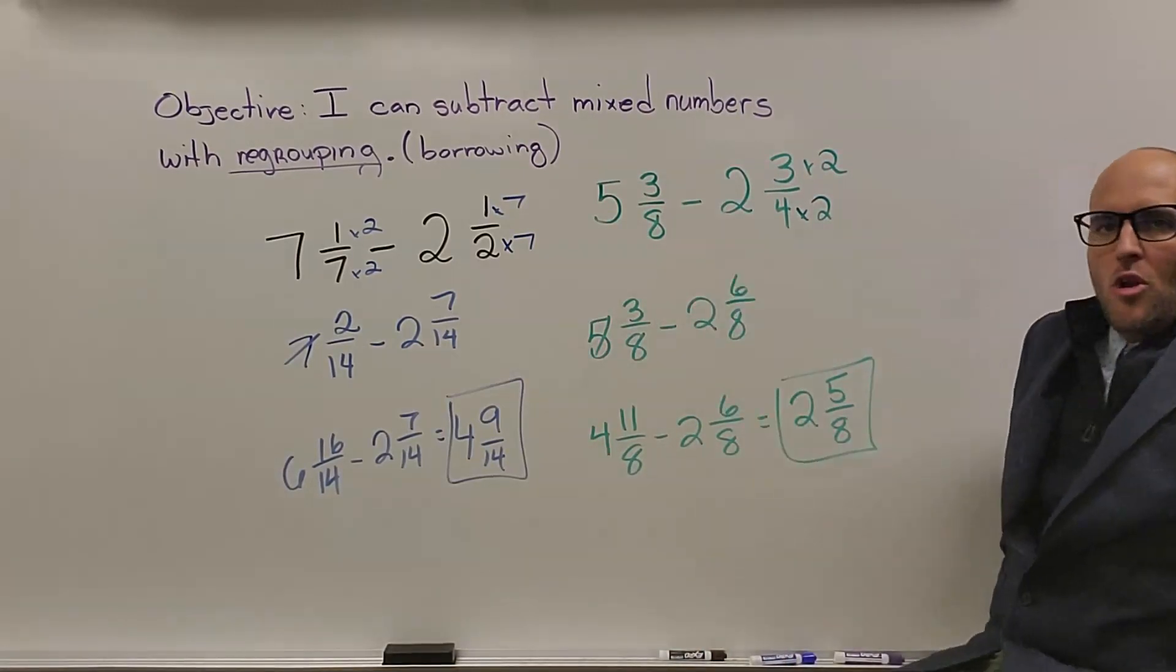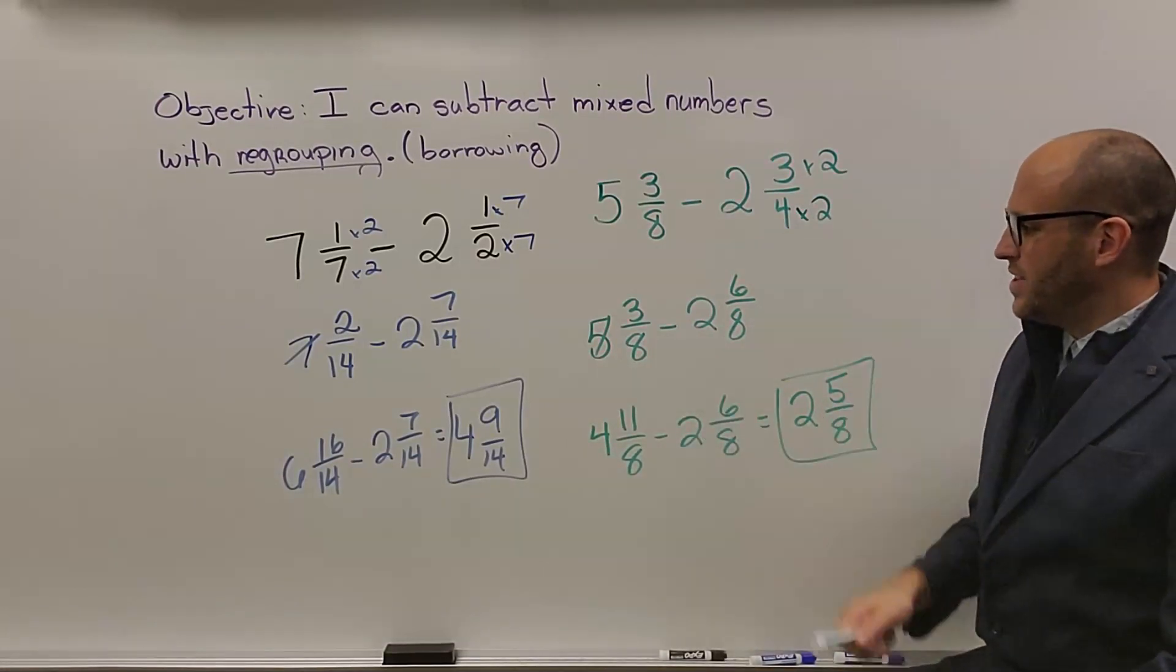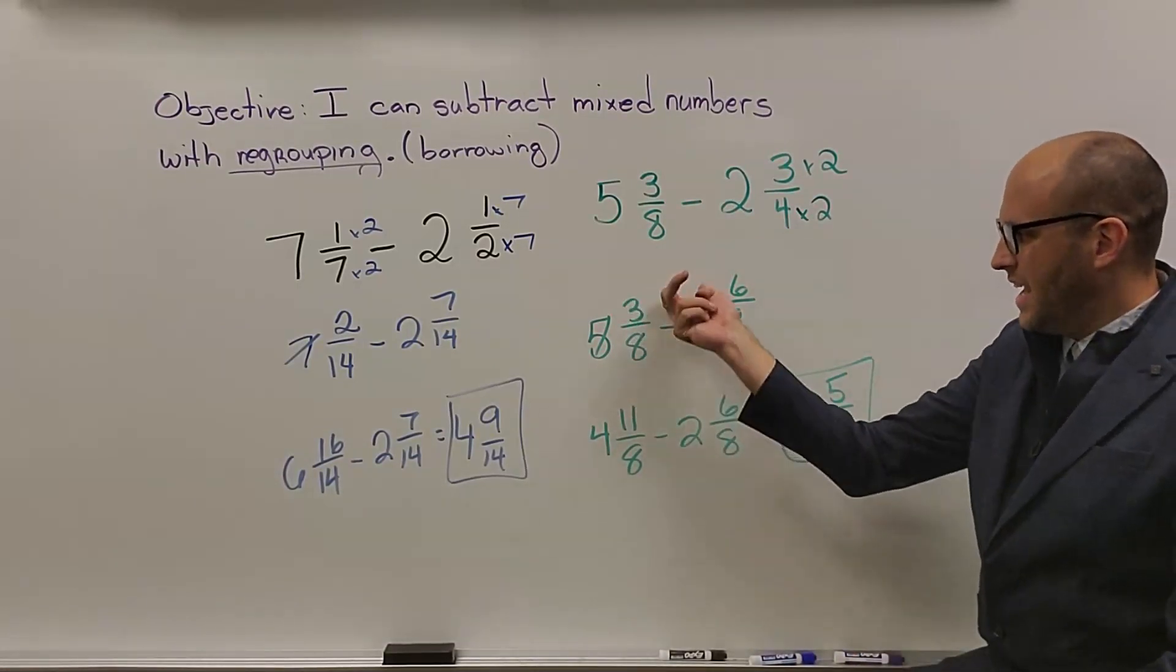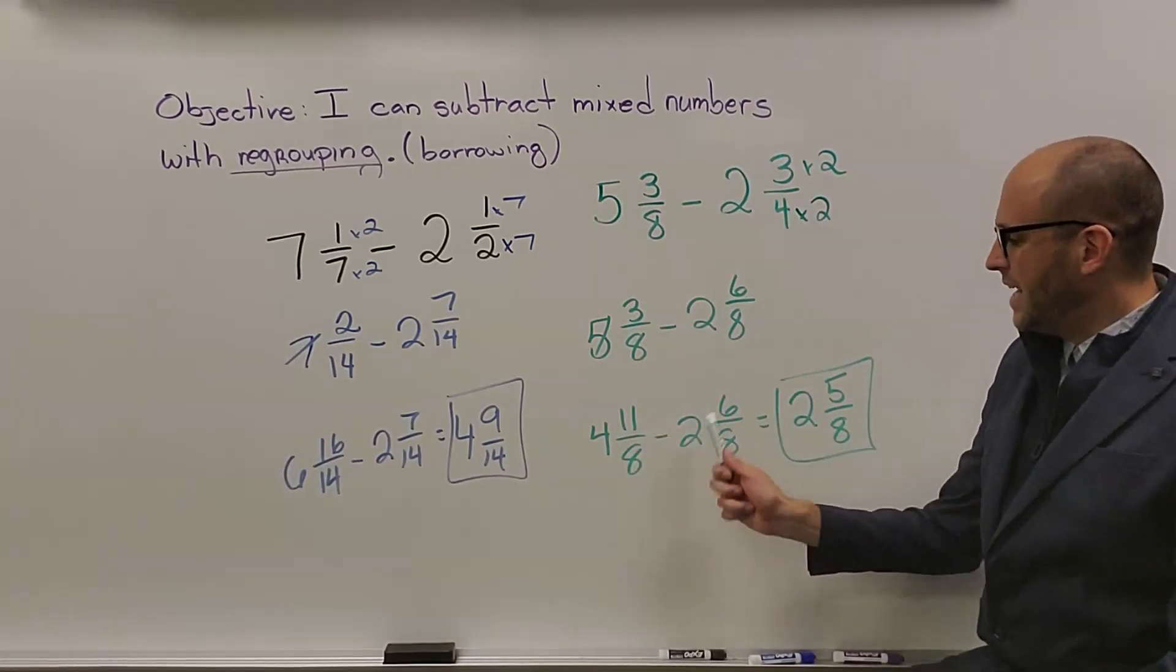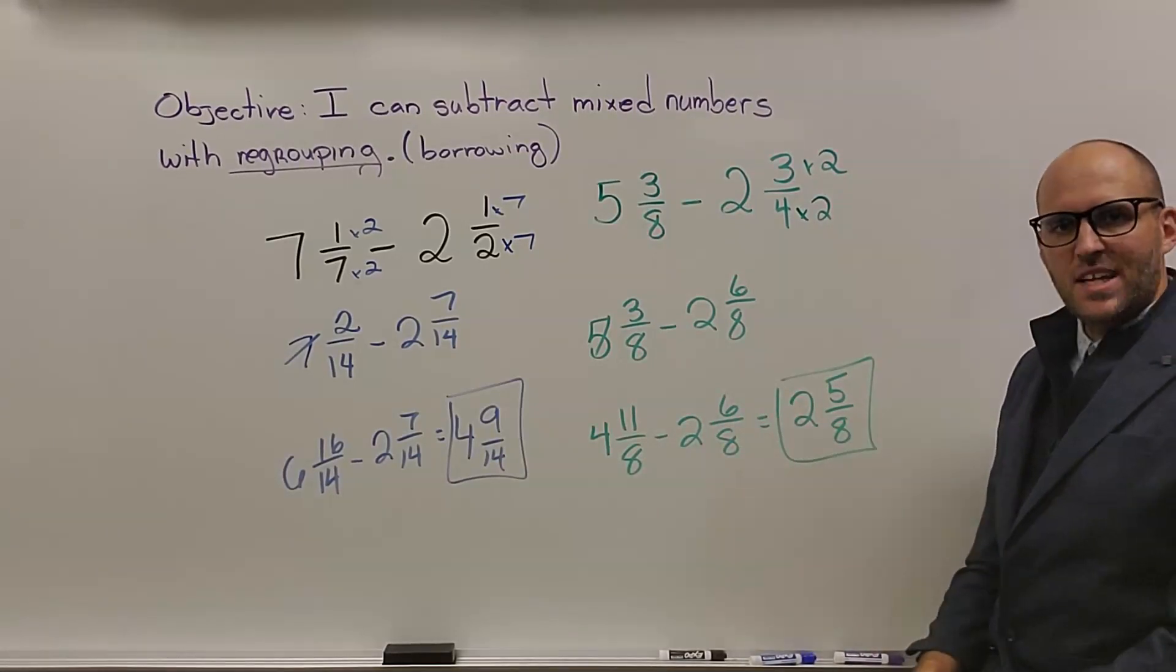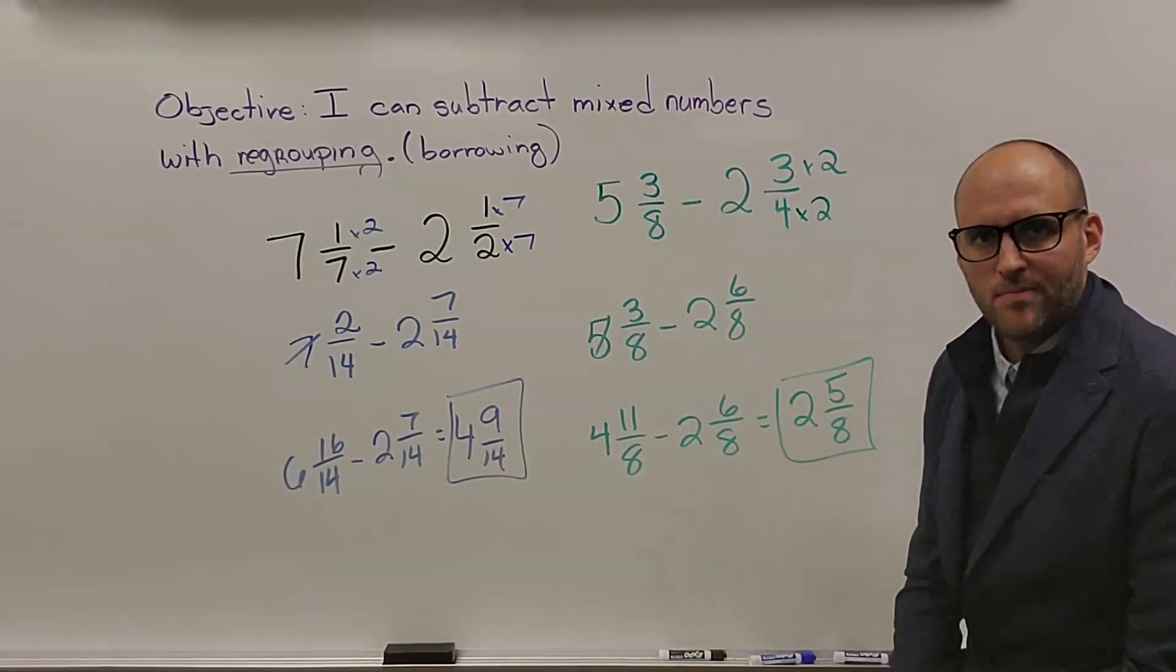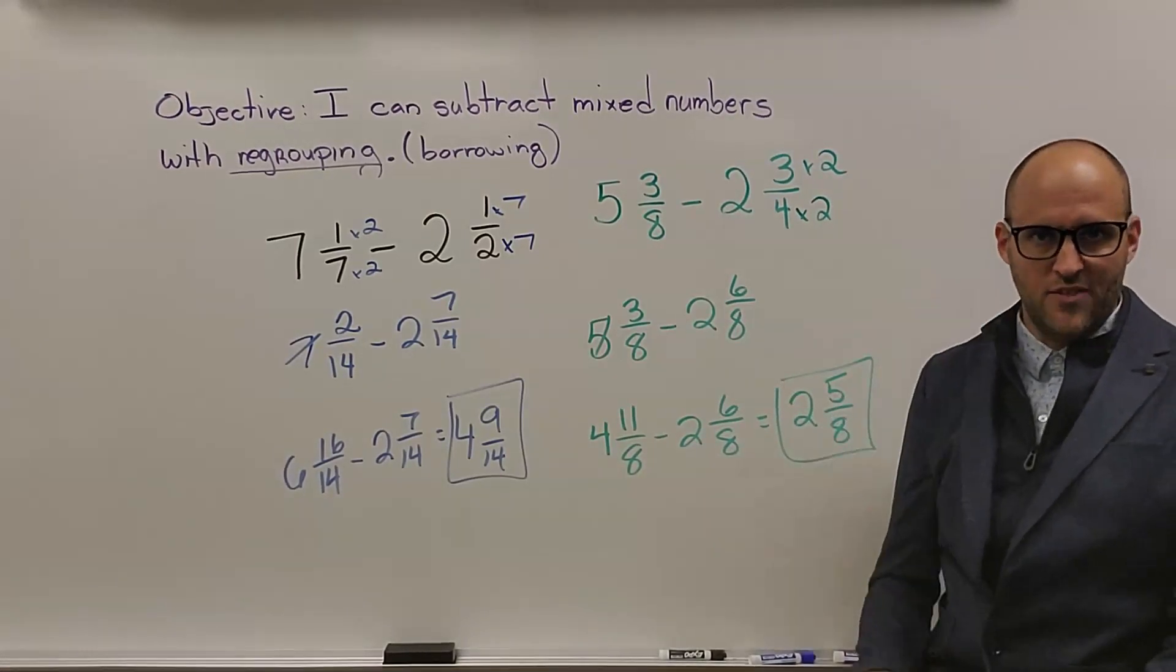Next problem, we only had to make one equivalent fraction. So we ended up with 5 and 3 eighths minus 2 and 6 eighths. We borrow 8 plus 3 is 11. That's how we ended up with 4 and 11 over 8 minus 2 and 6 eighths. Again, once we subtract, 2 and 5 eighths, no simplifying needed. And that hopefully got you a little pat on the back from whoever's watching if you got both of them correct.